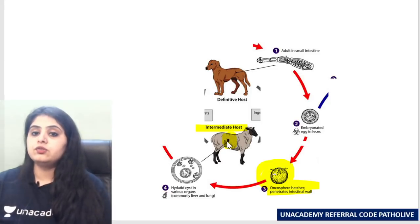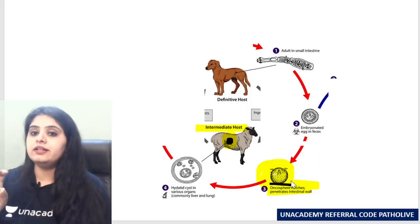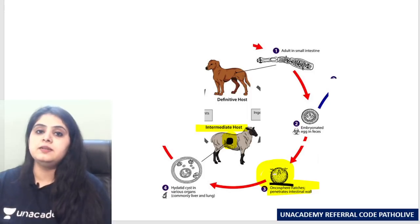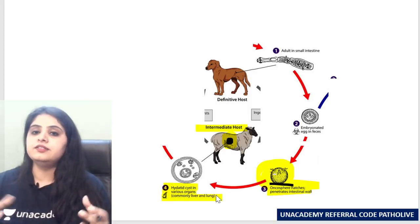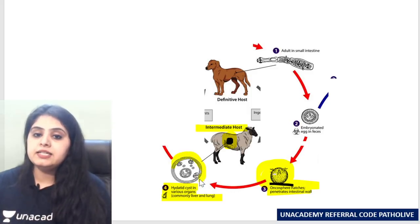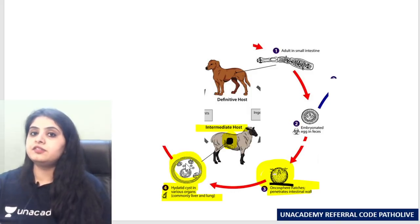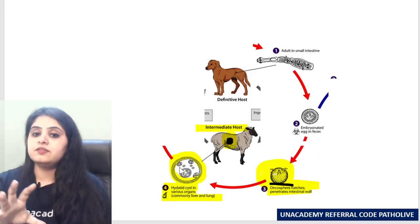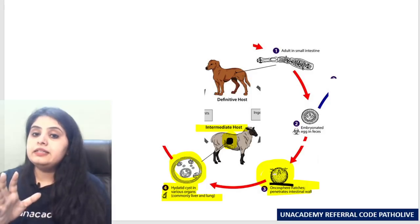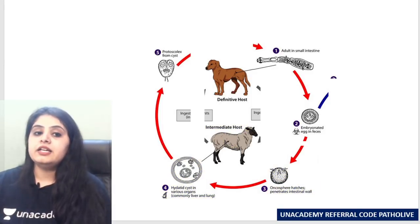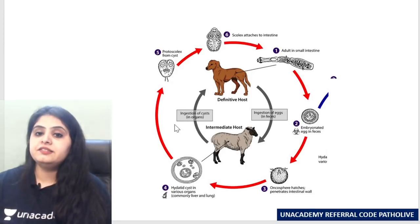The sheep or cattle have eaten the eggs, so the oncosphere penetrates into the intestine using its hooklets. It then goes to different organs — most importantly liver and lung — where it forms the hydatid cyst, a thick-walled cyst in which all the scolices are forming.